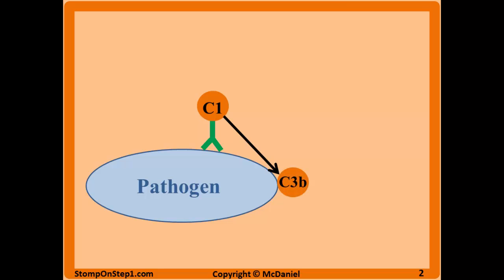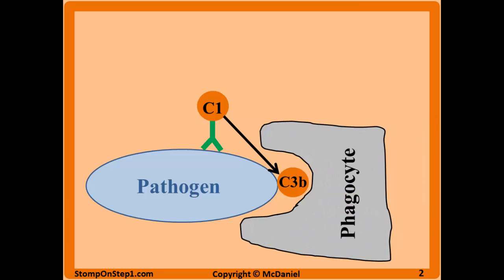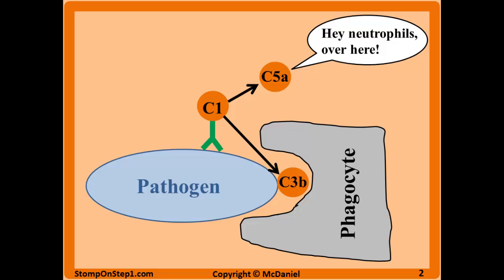One end result is the activation of C3B. C3B opsonizes the pathogens, which basically means it tags them so that phagocytes can find the pathogen more easily. You can see that once C1 is activated, it will eventually lead to activation of C3B through multiple steps. Another end result of the complement cascade is the creation of active C5A. C5A is a chemotactic factor that attracts neutrophils, similar to IL-8 and LTB-4.